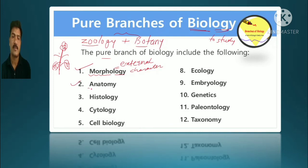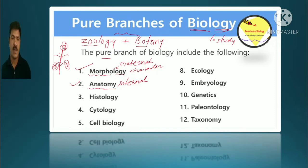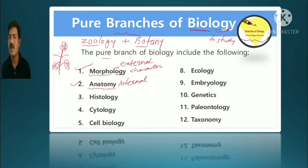The second branch is anatomy. Anatomy is the study of internal characters — if we take a section of any animal and see what is inside its body. Bones, tissues, organs, how they work internally — studying the internal structure of any plant or animal is anatomy.